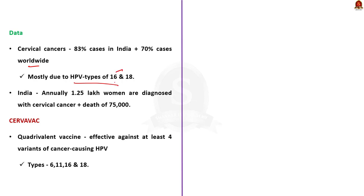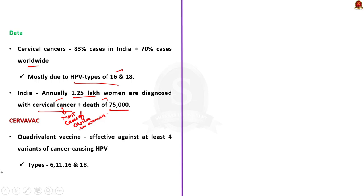In India specifically, annually 1.25 lakh women are diagnosed with cervical cancer and over 75,000 women die from the disease. Cervical cancer accounts for most cases of cancer in women in India. HPV infection is therefore one of the serious problems that needs to be addressed, and because of this seriousness, the Indian government expedited the development of HPV vaccines. As a result, Cervavac was developed.